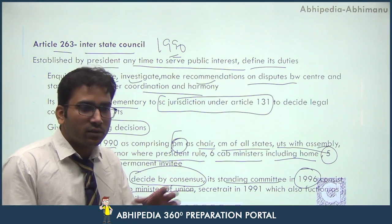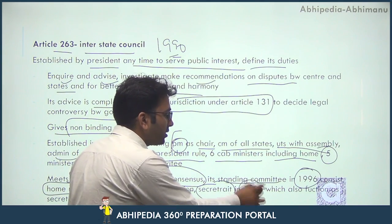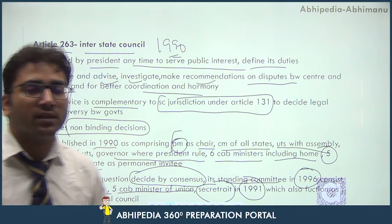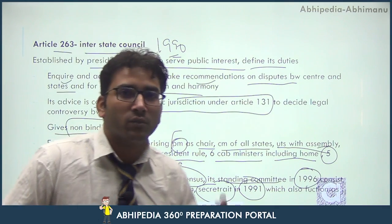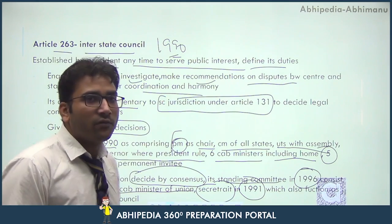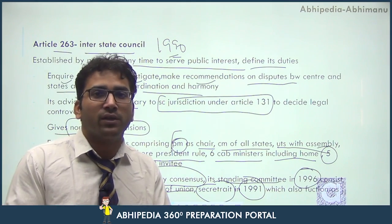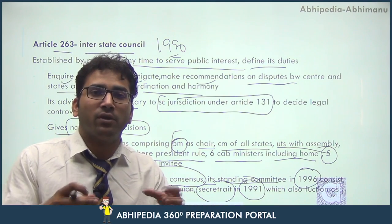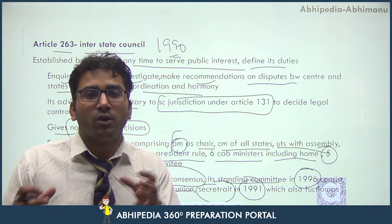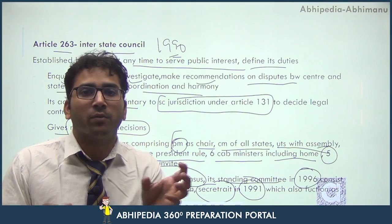To implement decisions and ensure documentary work, a Secretariat was established in 1991, which also functions as the Secretariat of the Zonal Councils. The crux of the Interstate Council is to have collaboration and cooperation among the central and state governments, ensuring they work in proper harmony and synchronization without conflict.